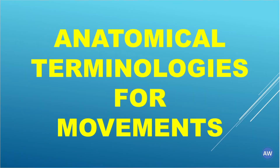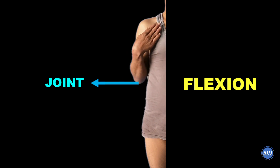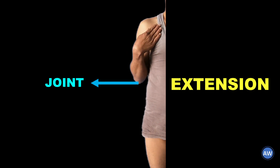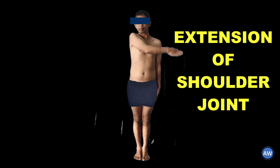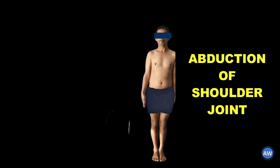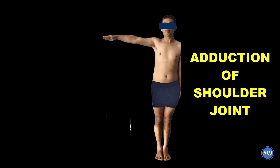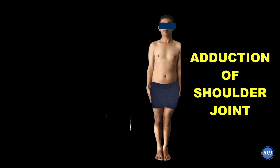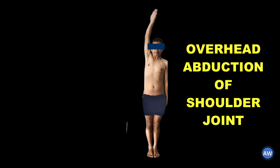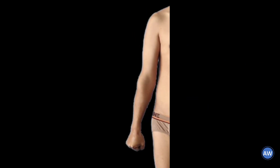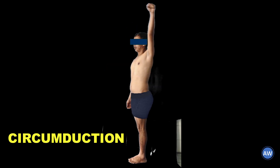Moving ahead, let us understand the terminologies to describe body movements. Flexion is a movement where two surfaces approach each other and come nearer. Just the opposite is extension, where the two surfaces move away from each other. Flexion and extension of the shoulder joint can be seen something like this. Abduction is a movement where the limbs move away from the midline of the body, and just the opposite is adduction, where the limbs move towards the body. If the limb is moved beyond 90 degrees, it is called overhead abduction.